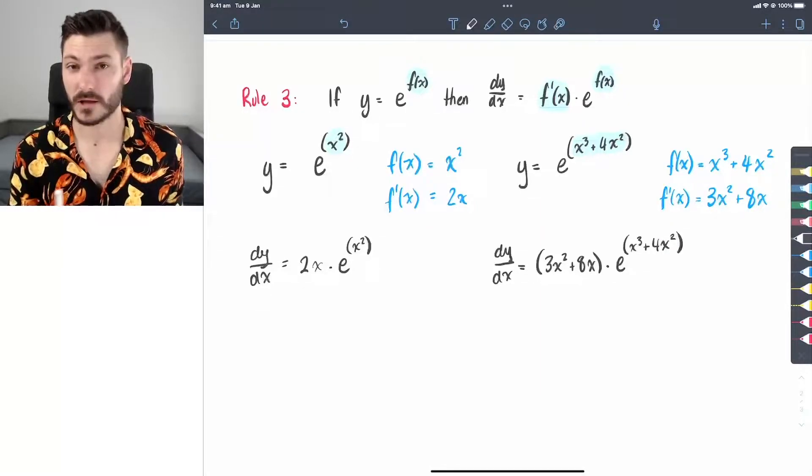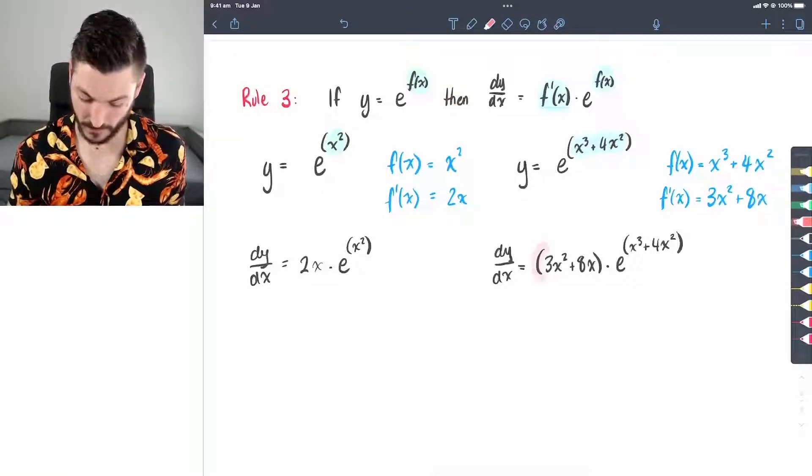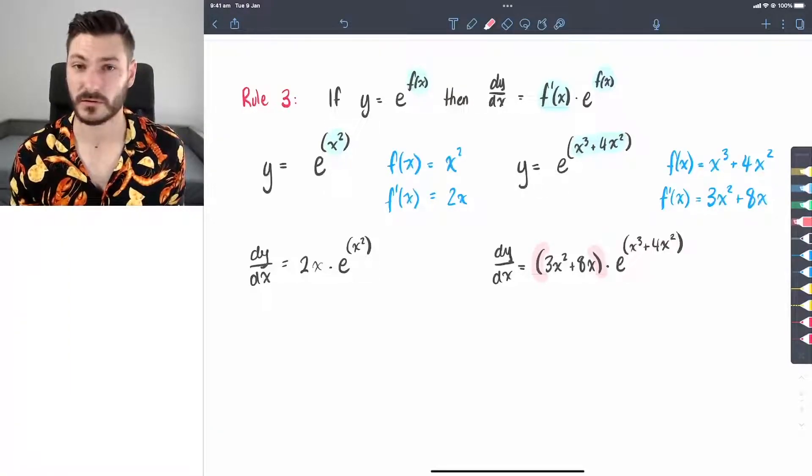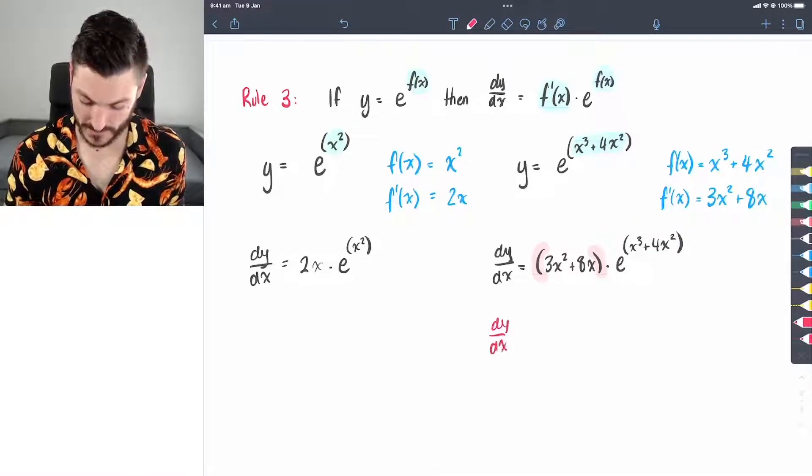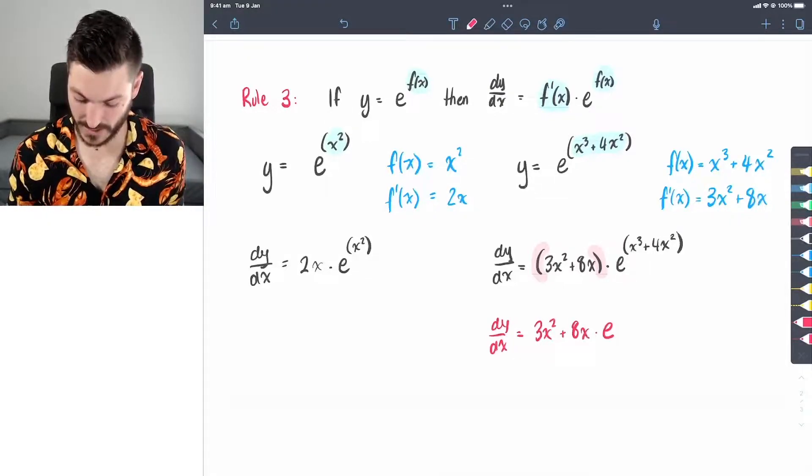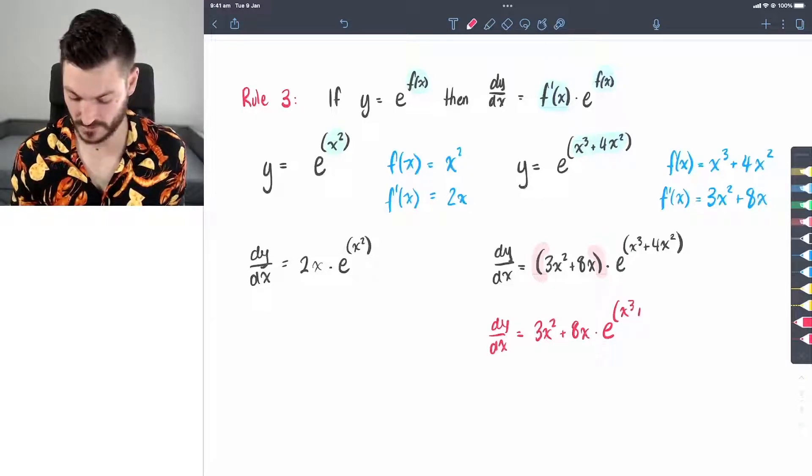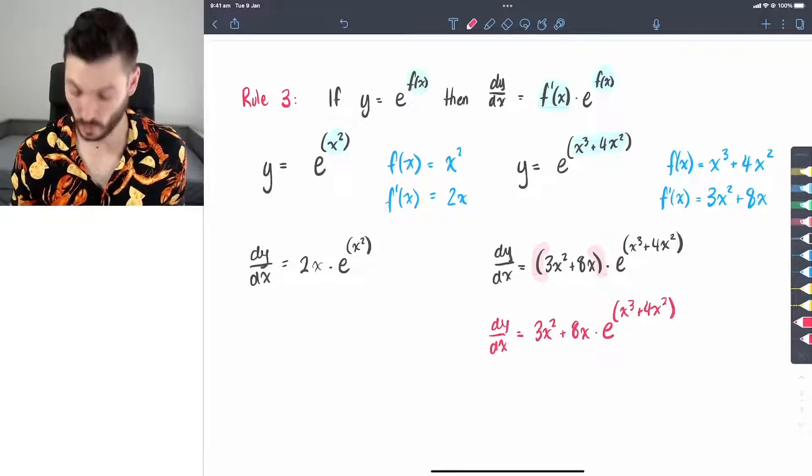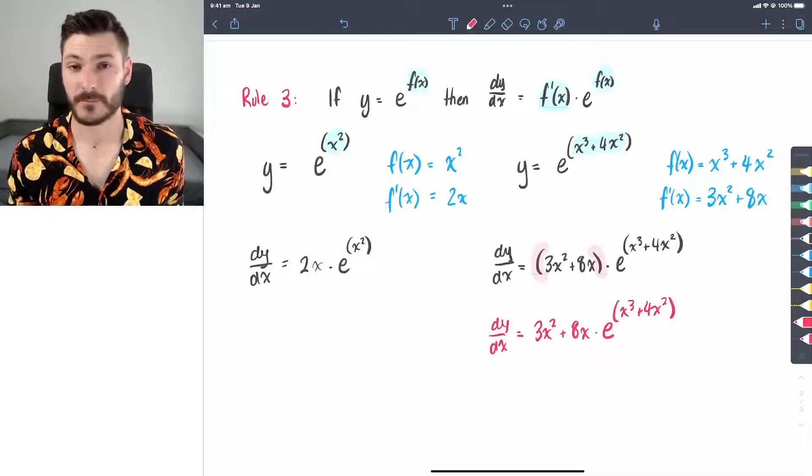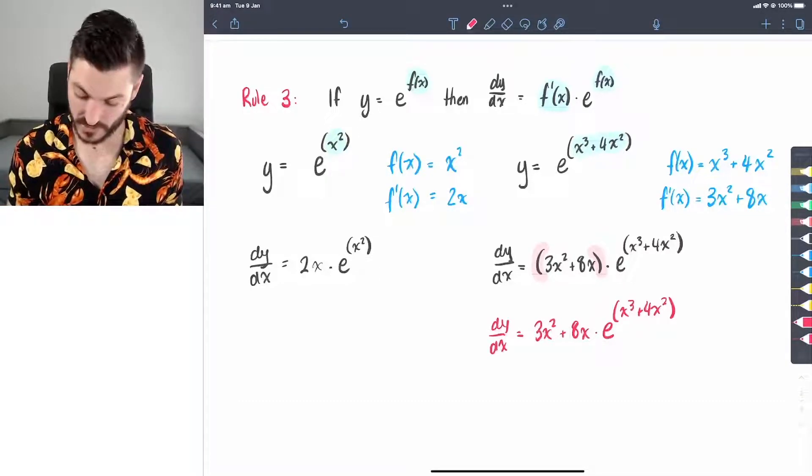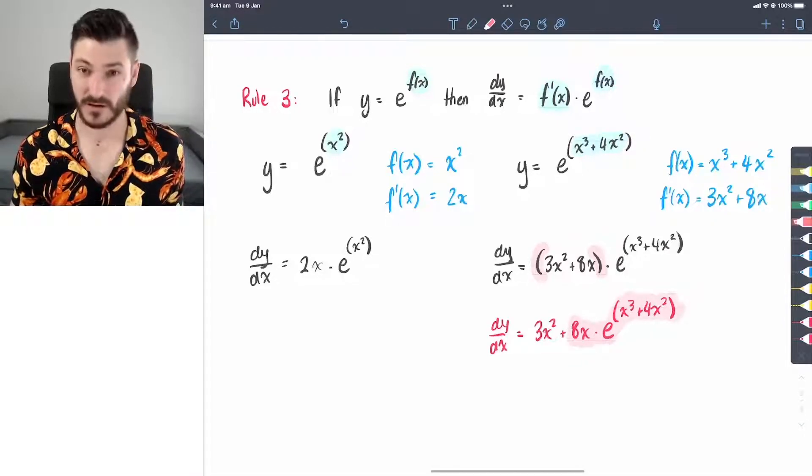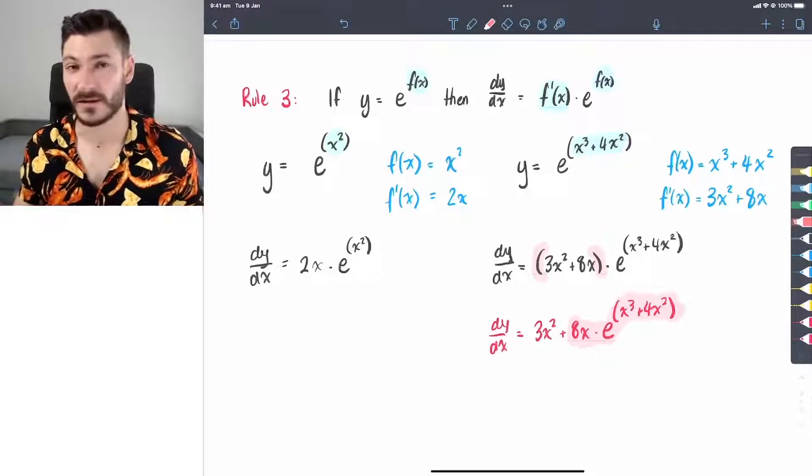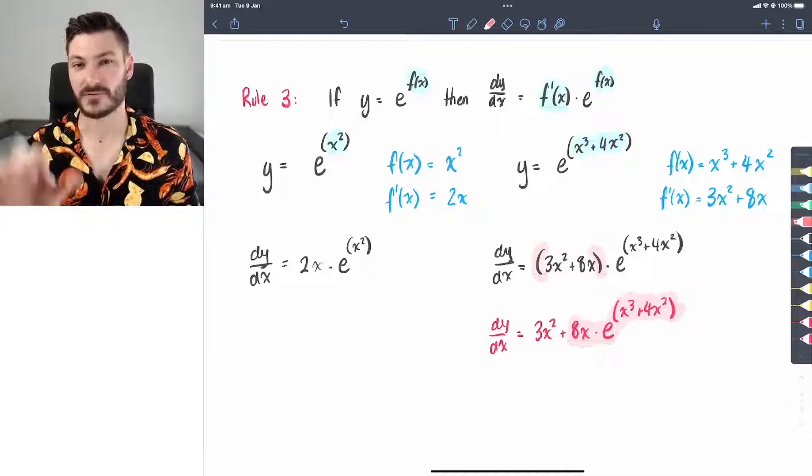Now, I just want to add really quickly, this pair of brackets is really important. If you don't put them in, you get something that looks like dy dx equals 3x squared plus 8x times by e to the power of x cubed plus 4x squared. And it's not quite right. The reason it's not quite right is because all we've got multiplying together is the 8x and the original function. The 3x squared is just hanging out the front as an addition. This is not what we want.